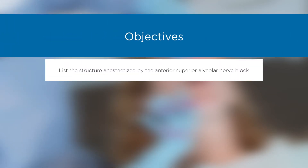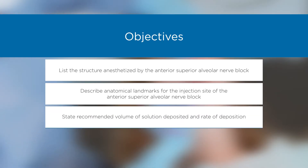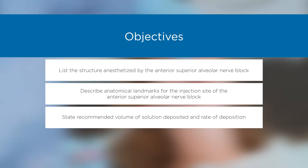Objectives: List the structures anesthetized by the anterior superior alveolar nerve block. Describe anatomical landmarks for the injection site of the anterior superior alveolar nerve block. State the recommended volume of solution deposited and rate of deposition.